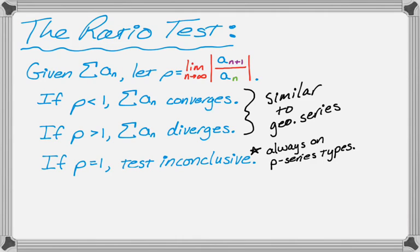And this inconclusive thing, it's useful to know that that will always happen if you try to use the ratio test on something that looks like a p series. So usually you want to use limit comparison test instead. So it will always happen there. So don't waste your time.